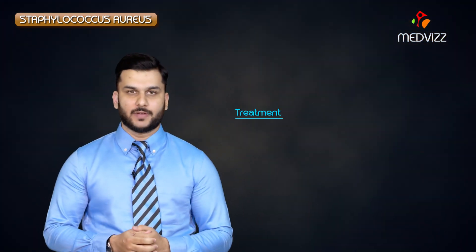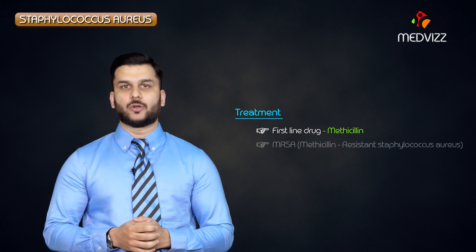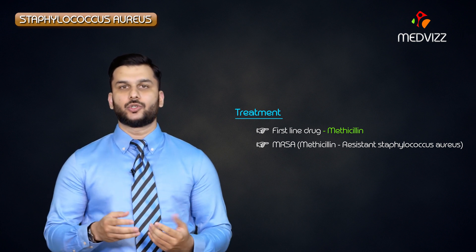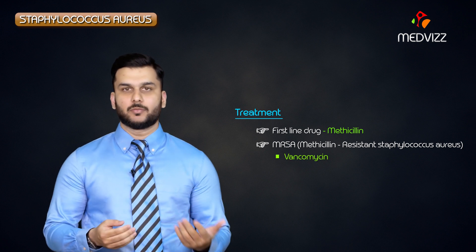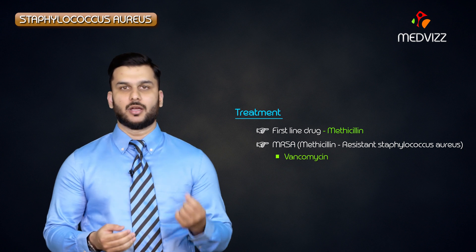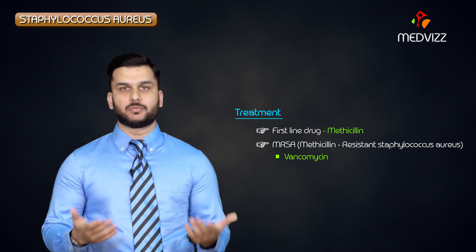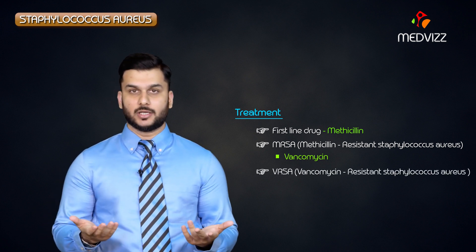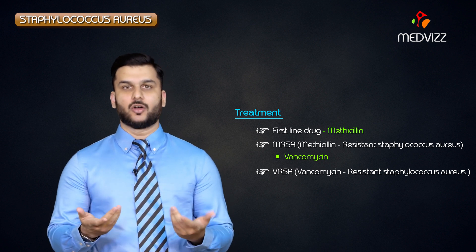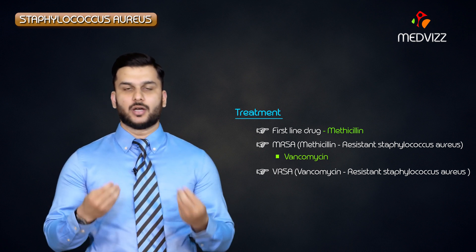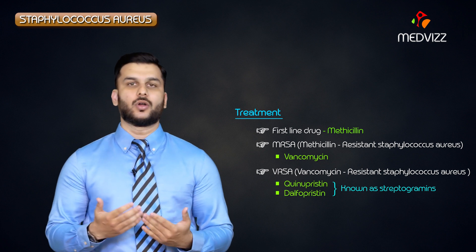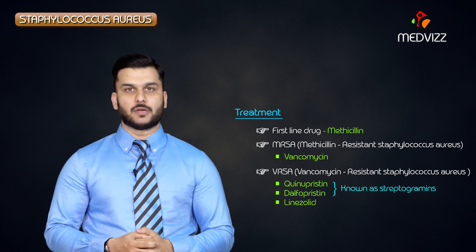To treat Staph aureus infections, the first-line drug is methicillin. However, many Staph aureus strains are now resistant to methicillin, so for those we use vancomycin. These resistant strains are called MRSA — methicillin-resistant Staph aureus. For VRSA (vancomycin-resistant Staph aureus), the higher-level drugs are quinupristin and dalfopristin together, known as streptogramins, or linezolid can also be used.